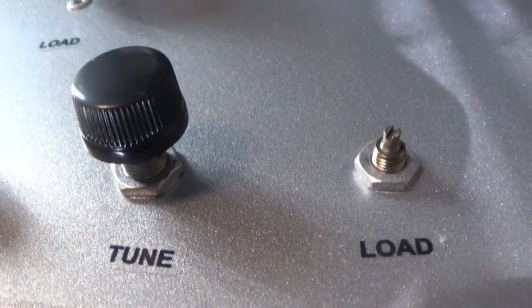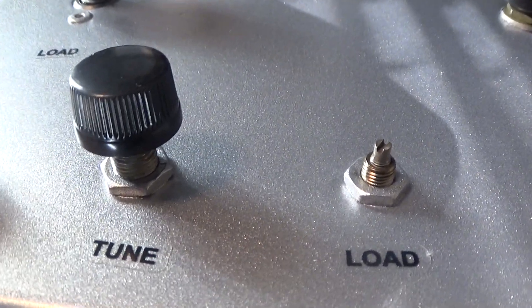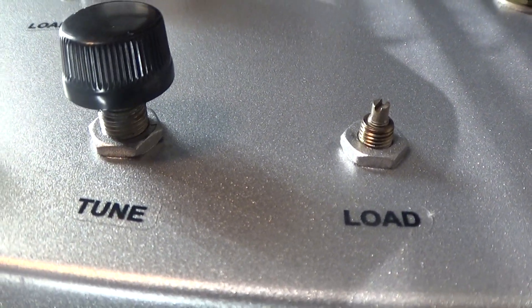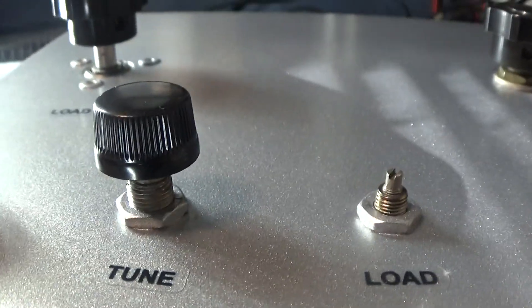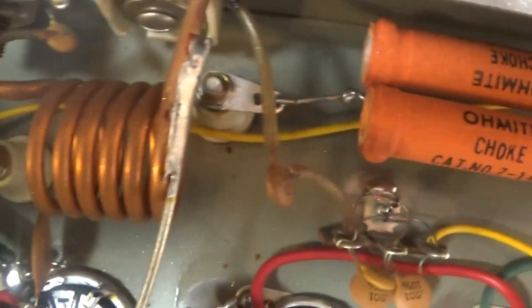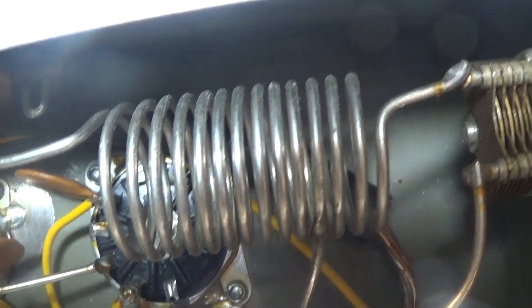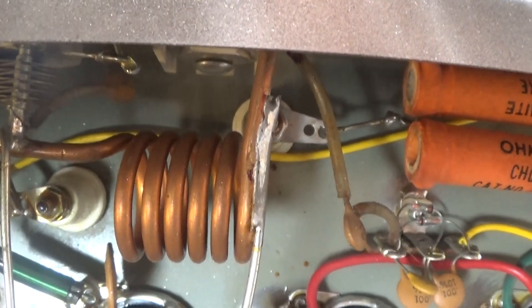And then when you're on low power, which is you're only using the four driver tubes going to output, that tune and load right there are what you're using. That's the inside of it, the tune and load, and that coil there on the low side, and then that's the coil on the high side that goes to the tube. So two different sets of tank outputs or tank coils depending on whether you're on high or low.